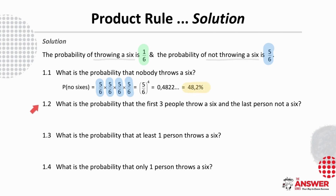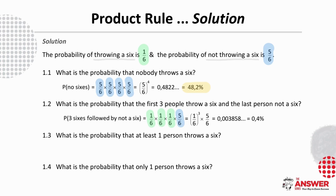Next, to find the probability of the first three people throwing a 6 and the last person not throwing a 6, we find the product of each probability along the way: 1/6 × 1/6 × 1/6 × 5/6, and this rounds off to 0.4%.